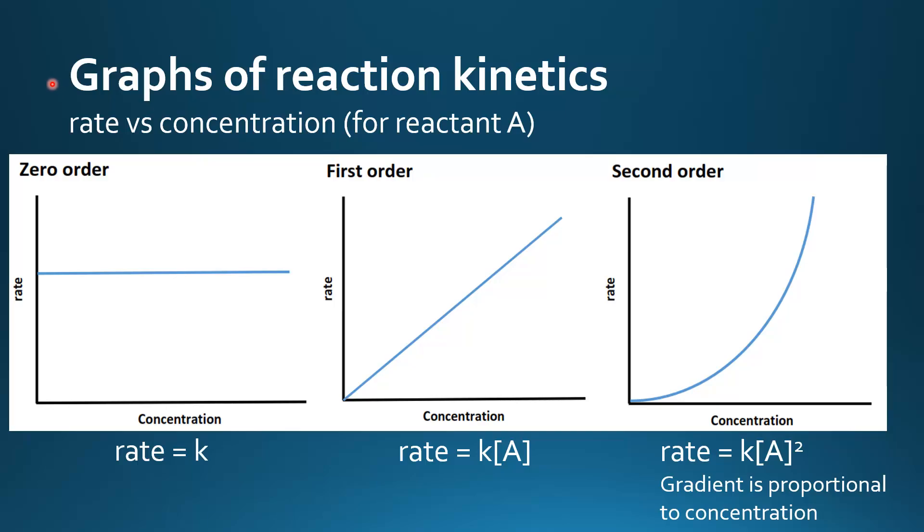Graphs of reaction kinetics. So we'll start with rate versus concentration graphs for a single reactant A. On the y-axis we have rate, on the x-axis we have concentration.